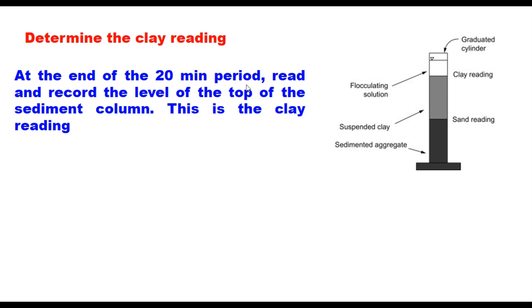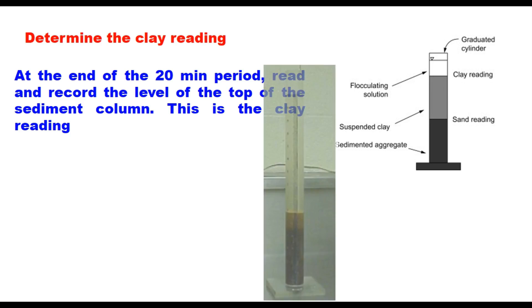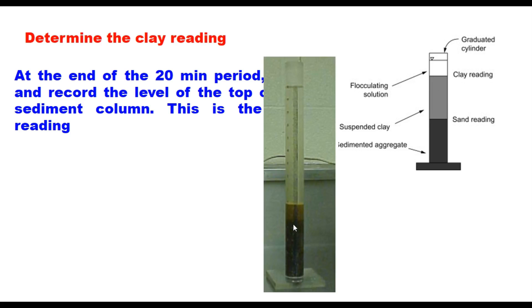At the end of the 20-minute period, read and record the level of the top of the clay column — this is the clay reading. If no clear line of demarcation has formed, allow the sample to stand undisturbed for another 10 minutes, then read. If still not clearly visible, repeat the test. The top of the suspended clay layer is recorded as the clay reading.